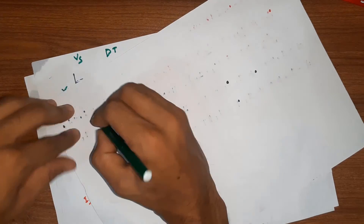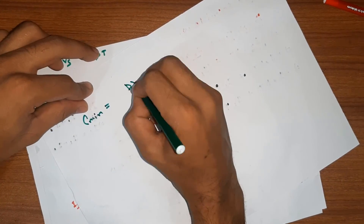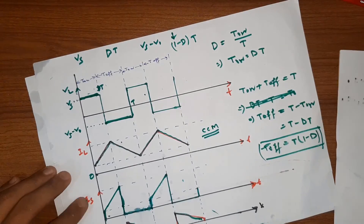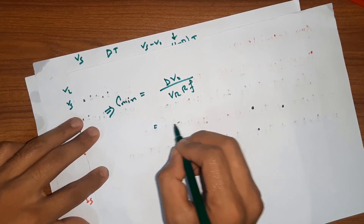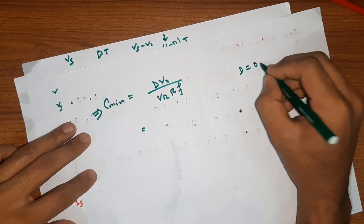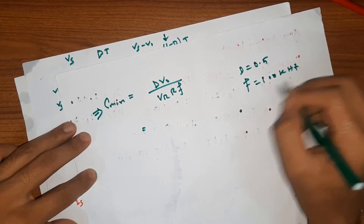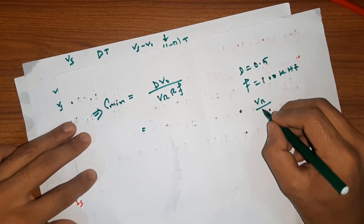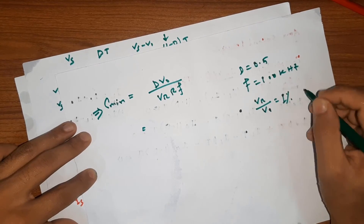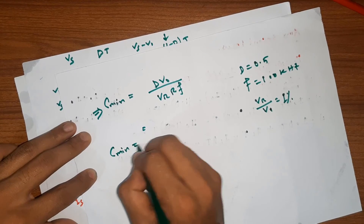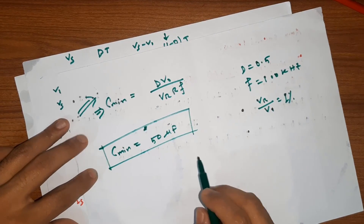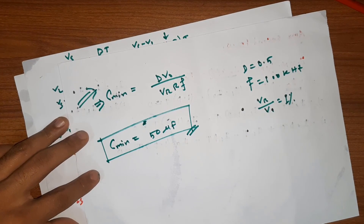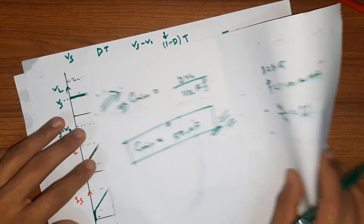For the capacitor, the minimum capacitance C_min equals D divided by (V_ripple ratio times R times f). For example, if D equals 0.5 and the switching frequency is 1000 kHz with a 1% voltage ripple, the minimum capacitor value works out to approximately 5 μF. This determines the minimum filter capacitor required.